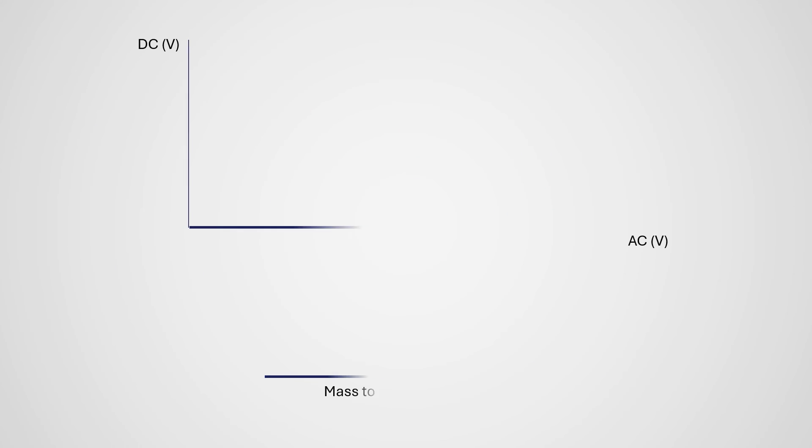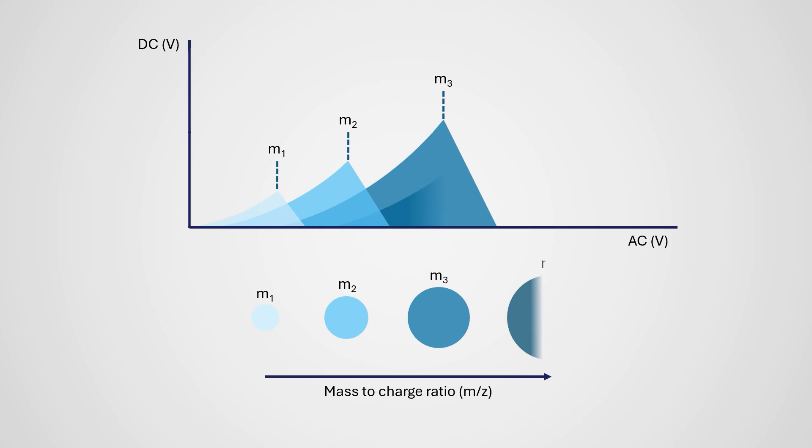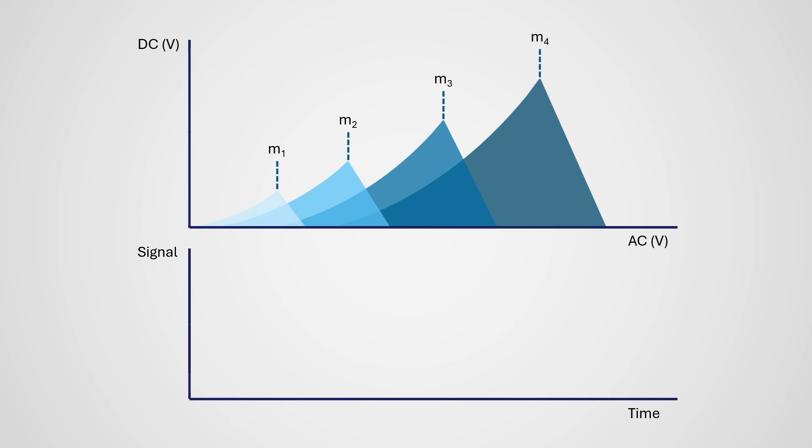The shaded regions on this graph show the range of AC and DC voltages that give stable trajectories for different mass to charge ratios. To measure a whole mass spectrum, the magnitude of the AC and DC voltages applied to the rods are varied with time. As the voltage conditions vary, only ions possessing the right mass to charge ratio for a stable trajectory are passed to the detector.